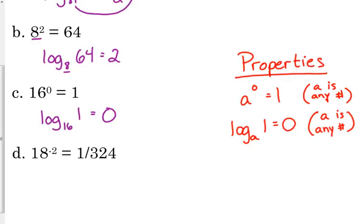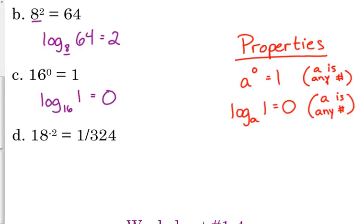Last one. We're going to look at 18 to the negative 2nd is 1 over 324. So, we need to write that log base 18 of 1 over 324 is equal to negative 2. So, the answer can be negative, but we cannot plug a negative number into the logarithm, but we can get a negative number as the answer.